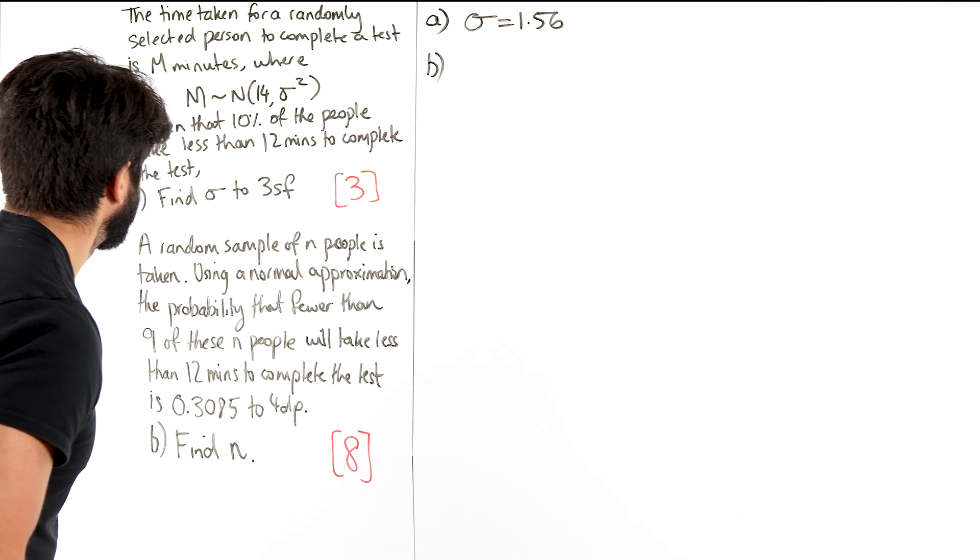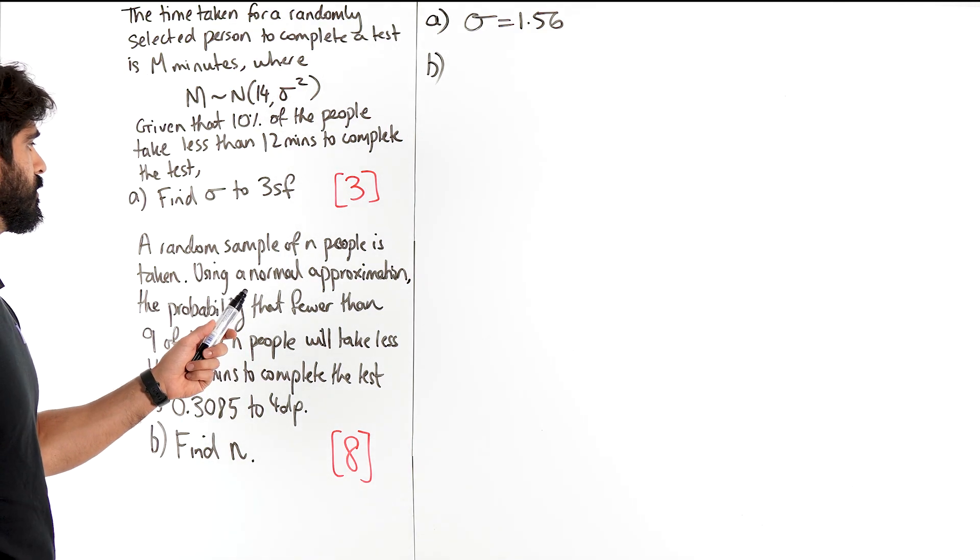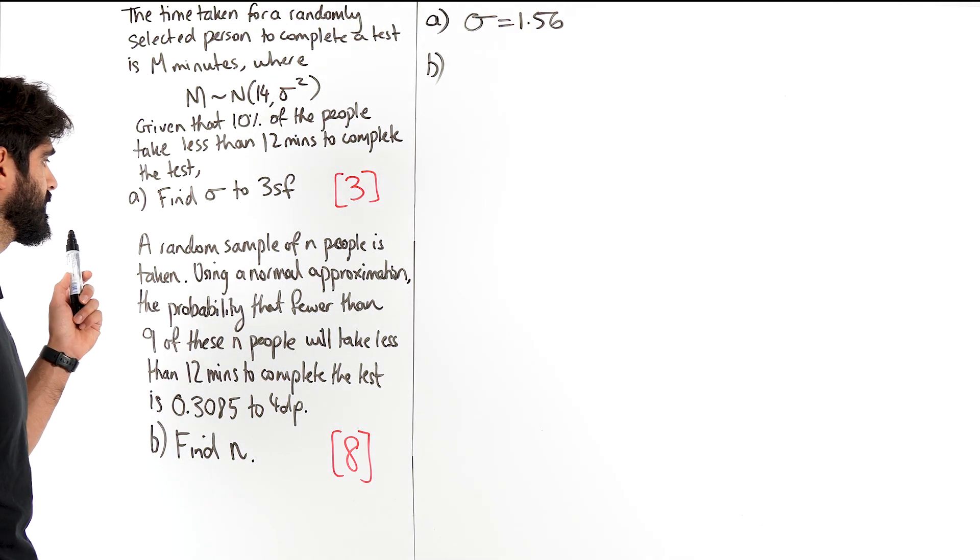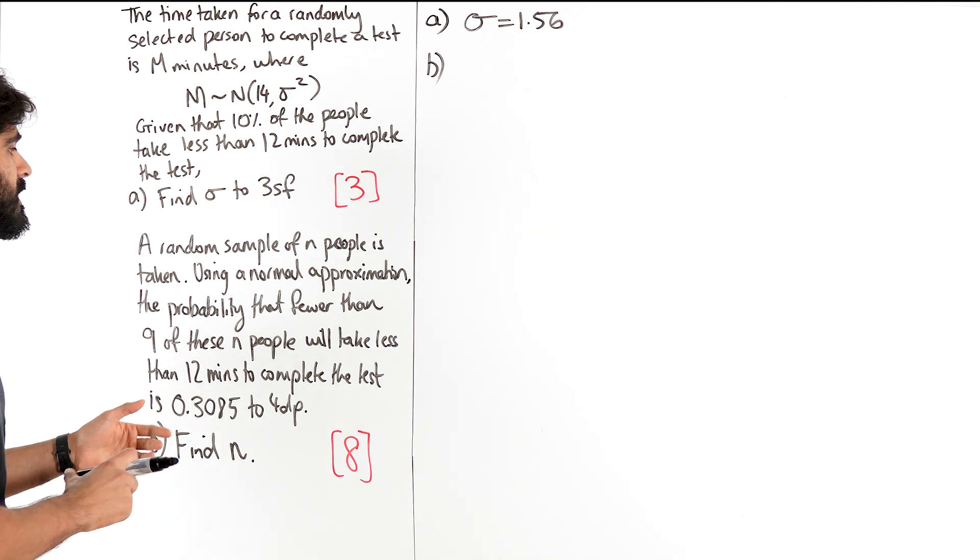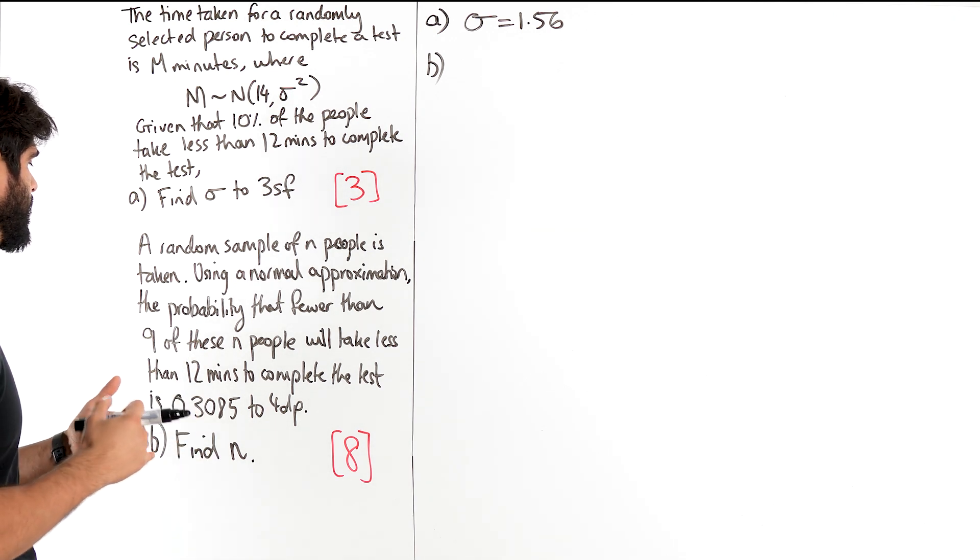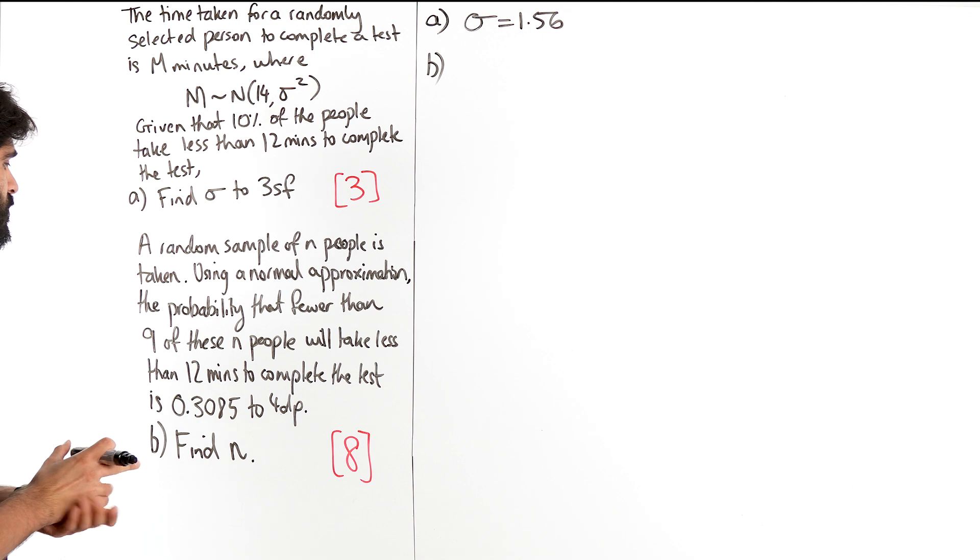Part B says that a random sample of n people is taken. Using a normal approximation, the probability that fewer than 9 of these people will take less than 12 minutes to complete the test is 0.3085 to 4 decimal places. Find the value of n.